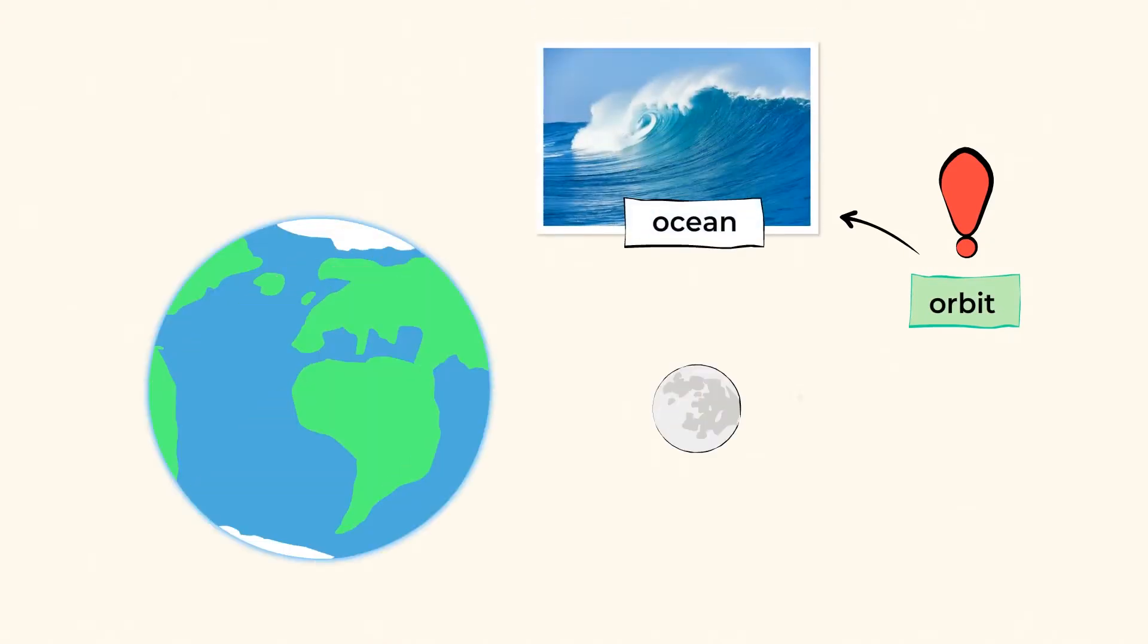As the moon orbits around Earth, gravity pulls the ocean water, and this causes them to rise a little bit. Other parts of Earth experience lower tides, because there's less gravity pulling from the moon.